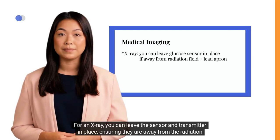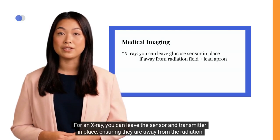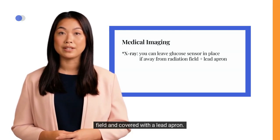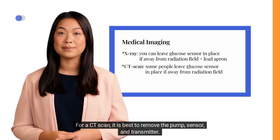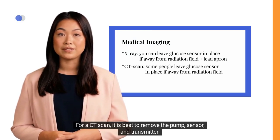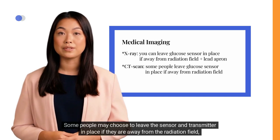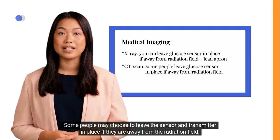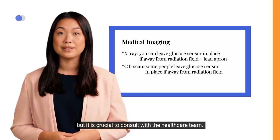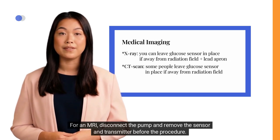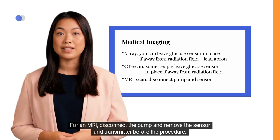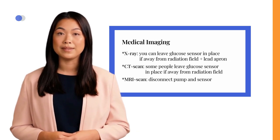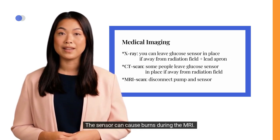For an X-ray, you can leave the sensor and transmitter in place, ensuring they are away from the radiation field and covered with a lead apron. For a CT scan, it is best to remove the pump, sensor, and transmitter, though some people may leave the sensor in place if away from the radiation field — consult with the healthcare team. For an MRI, disconnect the pump and remove the sensor and transmitter before the procedure, as the sensor can cause burns during an MRI.